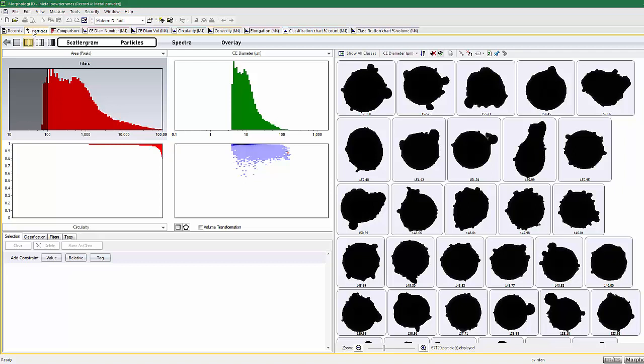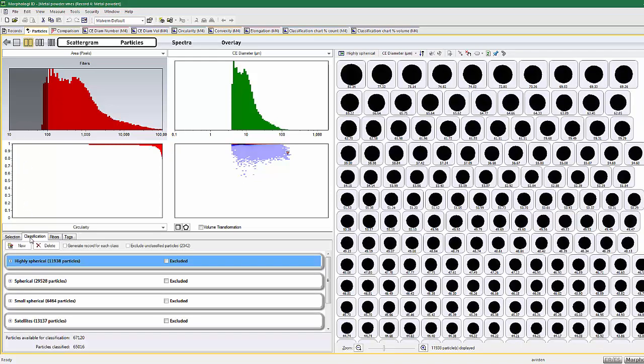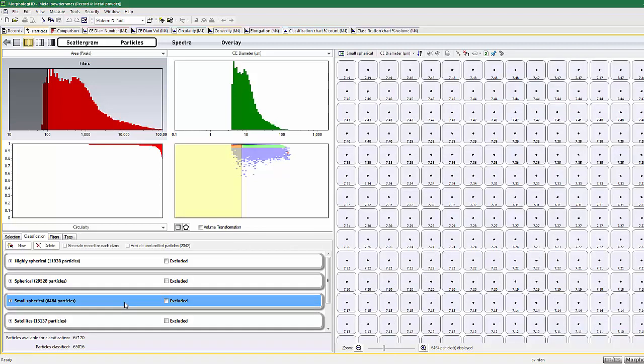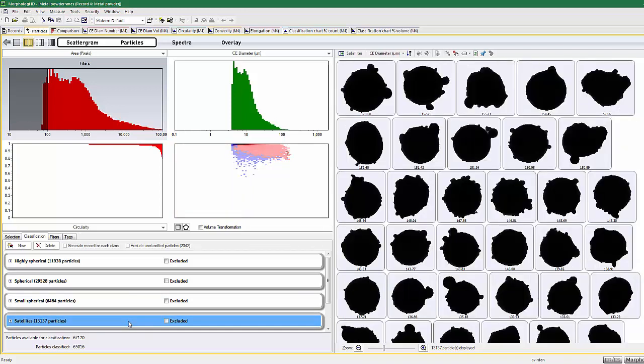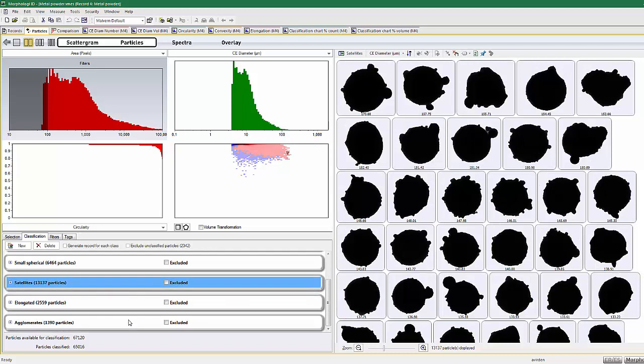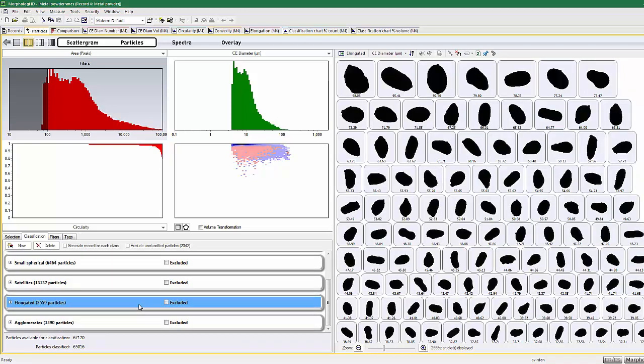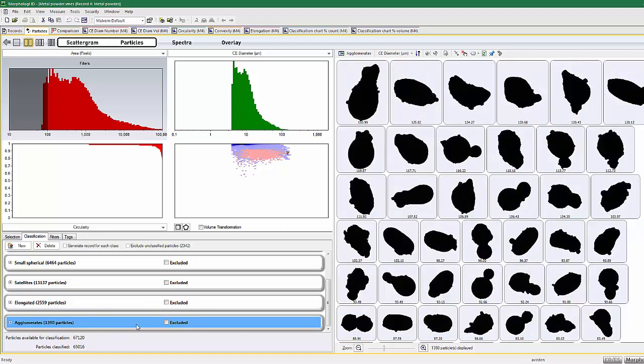Particles can also be classified into groups based on size and shape parameters, such as highly spherical particles, those that are just spherical, some smaller spherical particles, those with satellited particles attached, elongated particles, and agglomerates.